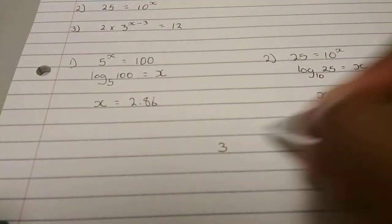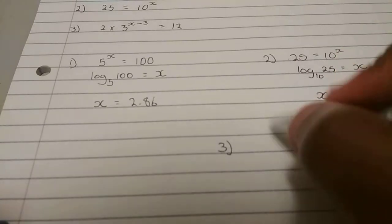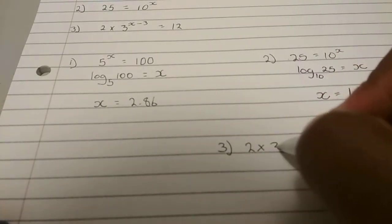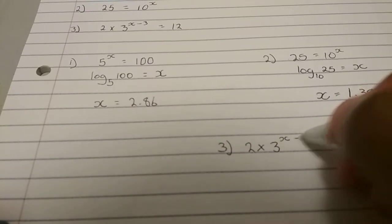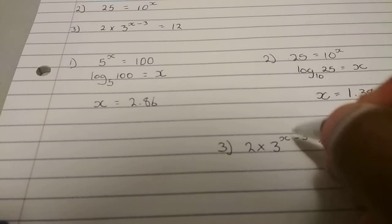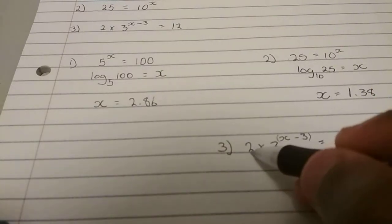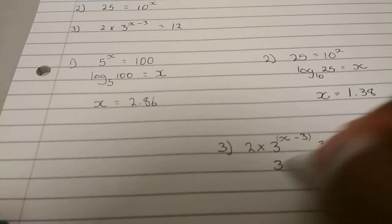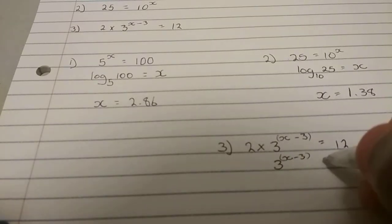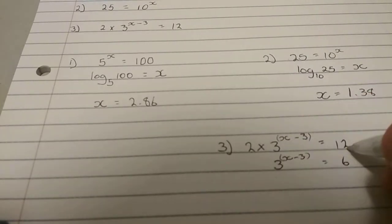Then the last one we have is this one, number 3. So here we'll have 2 times 3x minus 3 is equal to 12. Now you need to recognize that this is actually, we can make it one term. Now we need this part to be alone. So we'll need to get rid of this 2 such that we're left with 3x minus 3 is equal to 12 divided by 2. We'll get 6. This 2 divided both sides and we'll get that.